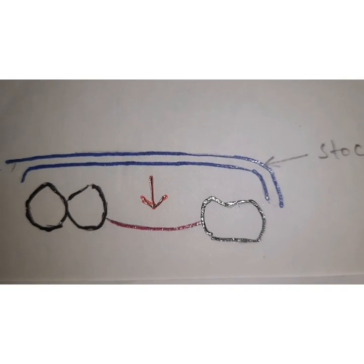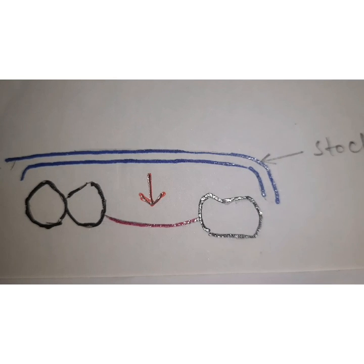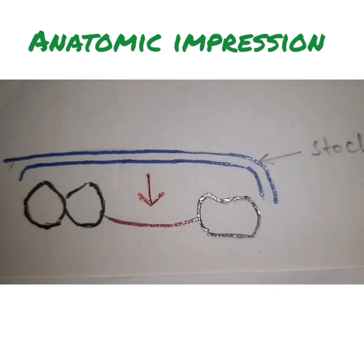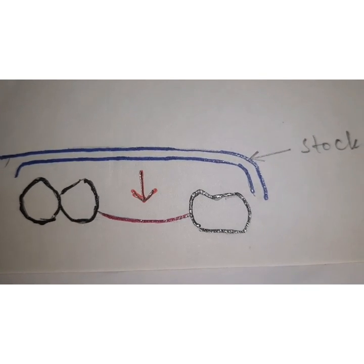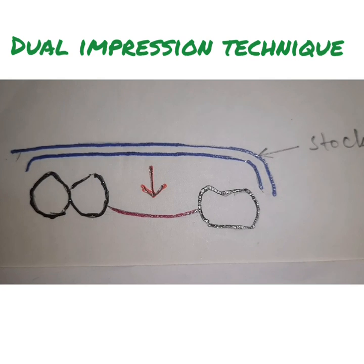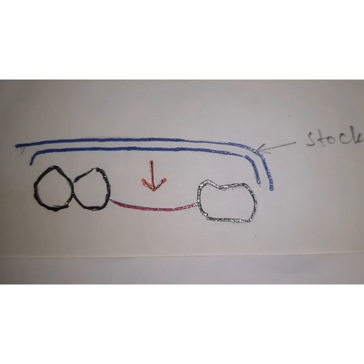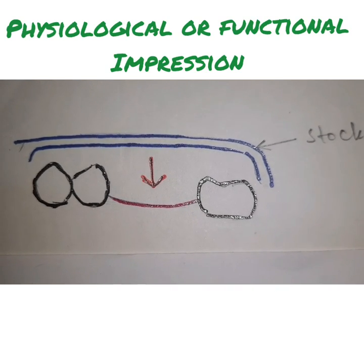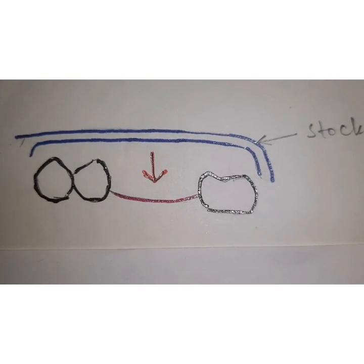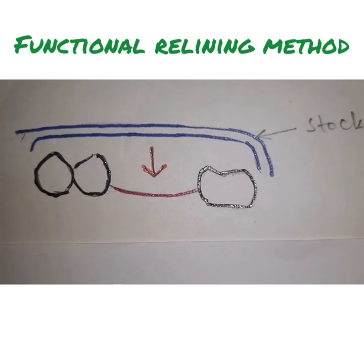For impression making: totally tooth-supported regions like Class 3 and Class 4 use a stock tray with alginate or silicone impressions. For distal extension cases, you use a dual impression technique. There are basically two methods: one is the physiological or functional impression technique, and another is the selective pressure impression technique. The physiological or functional impression techniques are of three types: McLean and Hindle's method, the functional relining method, and the fluid wax method.